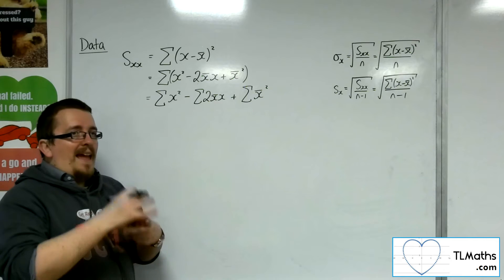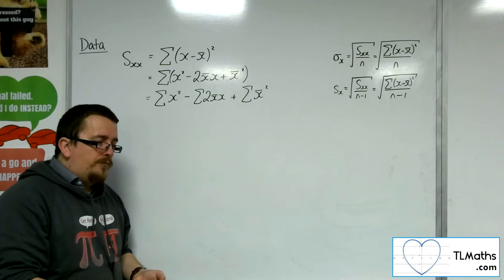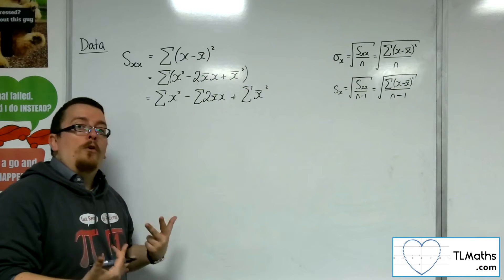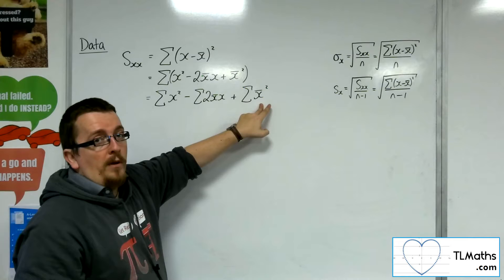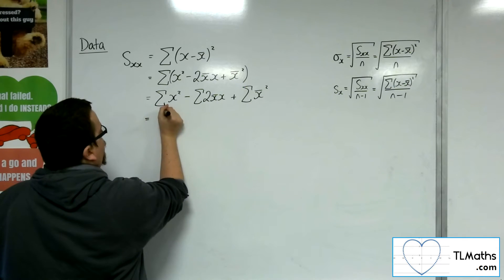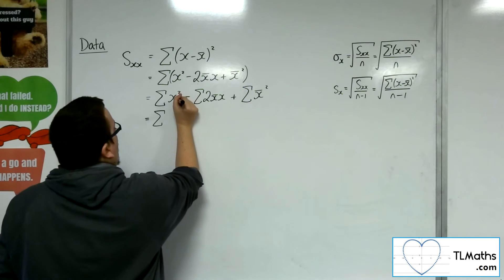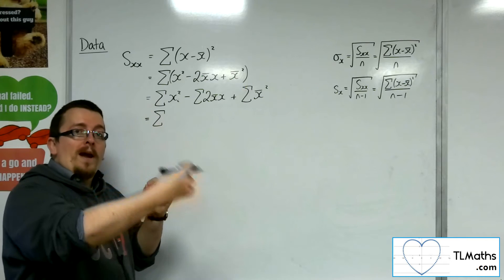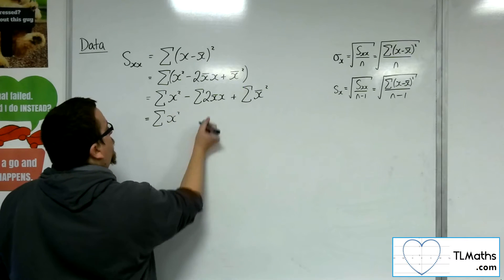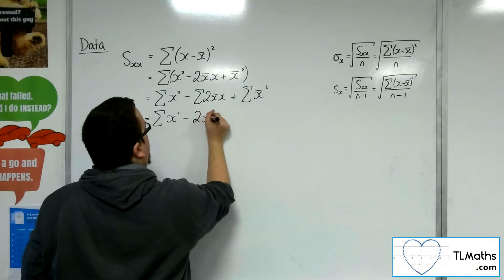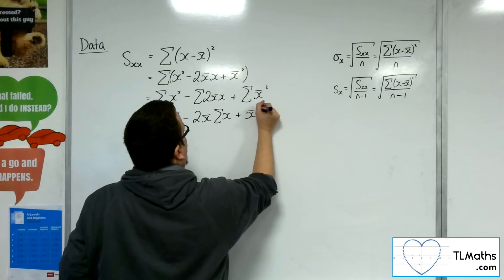Now, x-bar and x-bar squared — and the two — these are just fixed numbers. So what I can do is factor those numbers out. I can factor the two x-bar out of the summation, and I can also factor the x-bar squared out of its summation. I can't factor the x squared out because that's x-i squared — all the individual x's being squared and added together — so that's not one fixed number and must stay as it is. The two x-bar can come outside, leaving a summation of x, and I can pull the x-bar squared out, leaving a summation of one.